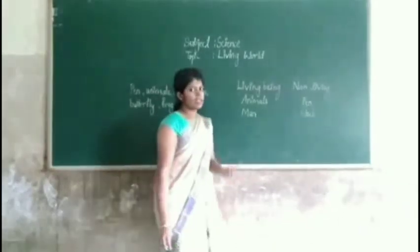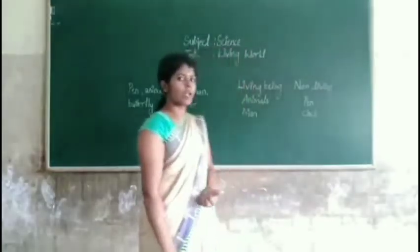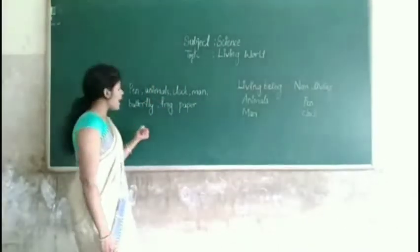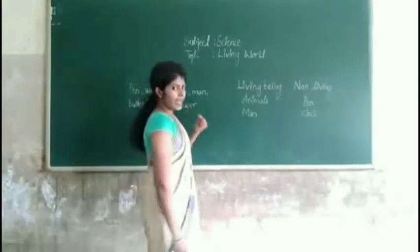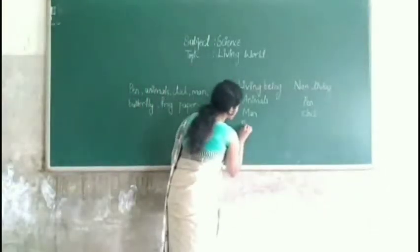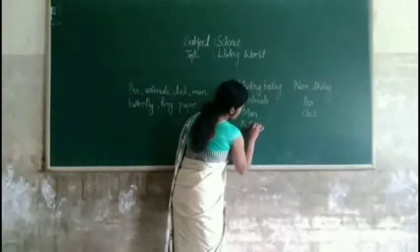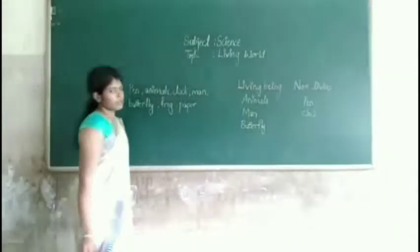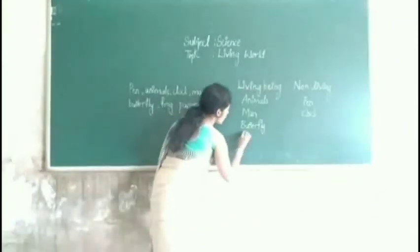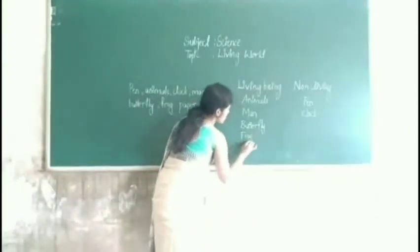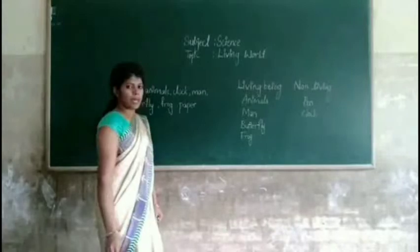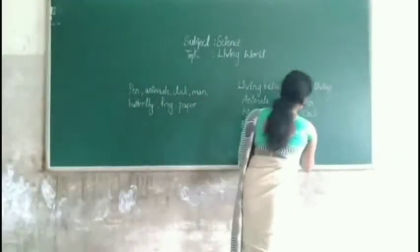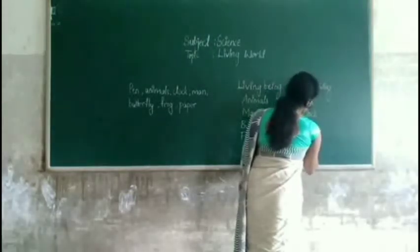Because in last class we learnt about living and non-living organisms. On that basis we can easily identify living and non-living. Butterfly is also a living being. Next is frog — frog is also a living organism. Next one is paper. Paper is a non-living thing.